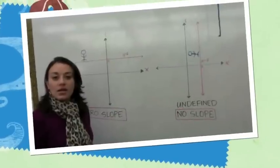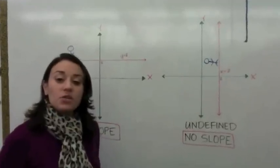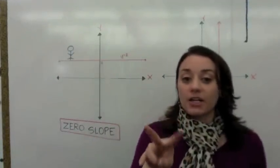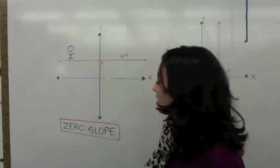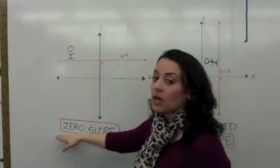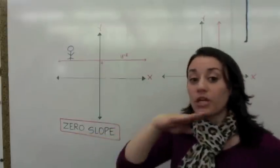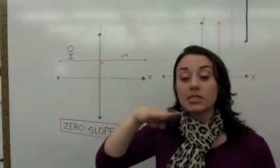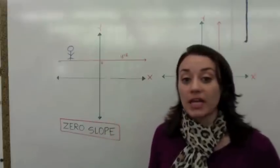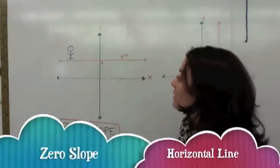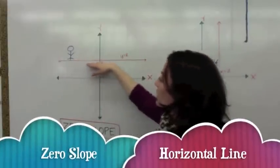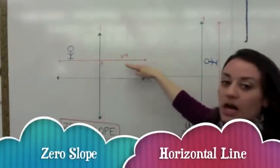Very good. Sometimes when you're given two points on a line, you get zero slope. That's right — zero slope gives you a horizontal line.